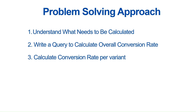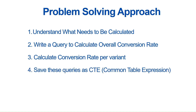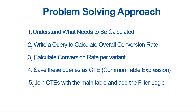The steps are: write a query to calculate the overall conversion rate; write another query to calculate the conversion rate per variant; save both queries as CTEs; join the CTEs with the main table; and finally apply a filter where the variant conversion rate is greater than the overall conversion rate. Let's now move to write the SQL query in MySQL Workbench.